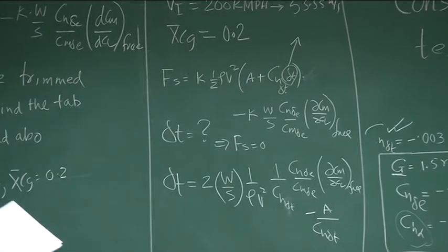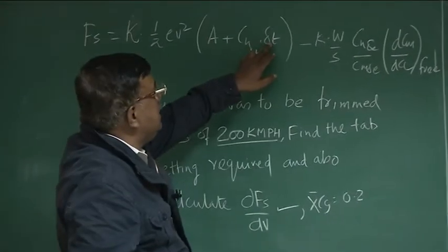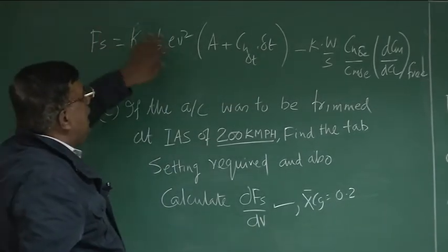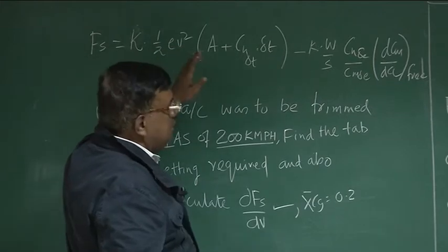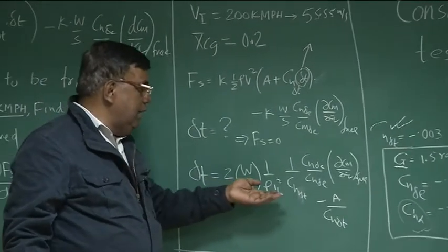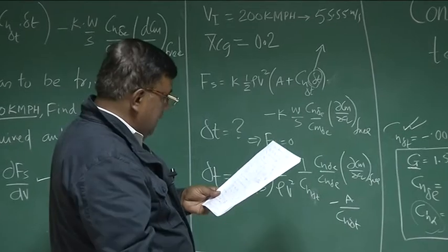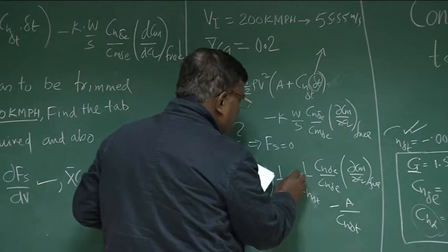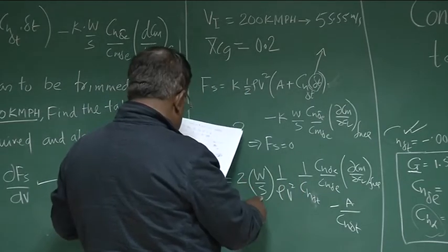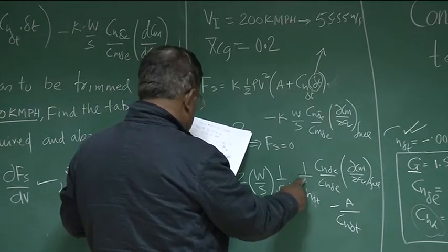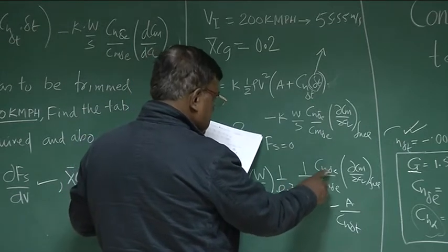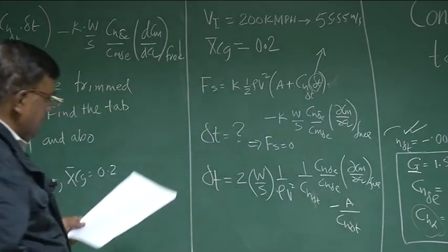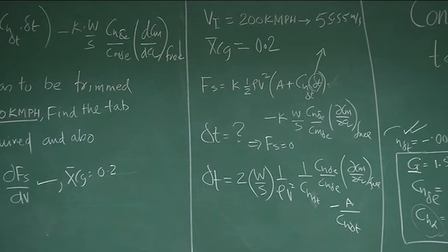I will get δt expression as 2W by S, 1 by ρ V square, 1 by CH_δt, CH_δt into CH_δe by CM_δe into dCm by dCl free minus A by CH_δt. Please understand what you have done. You have done nothing. We have to calculate δt and for δt, Fs has to become 0. So I put 0 here and then do this algebraic manipulation to get this expression, which you can yourself find out and if there is any mistake, you should be able to correct it. For example, now I see a mistake here. This will be 2W by S, 1 by ρ V square into 1 by CH_δt, CH_δe by CM_δe dCm by dCl free minus A. Apparently there is no mistake, but you should be very careful.